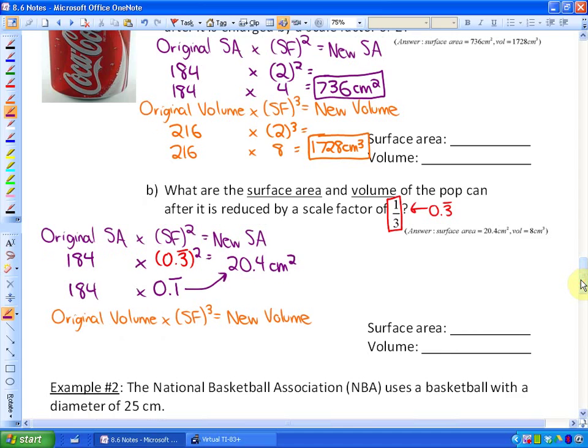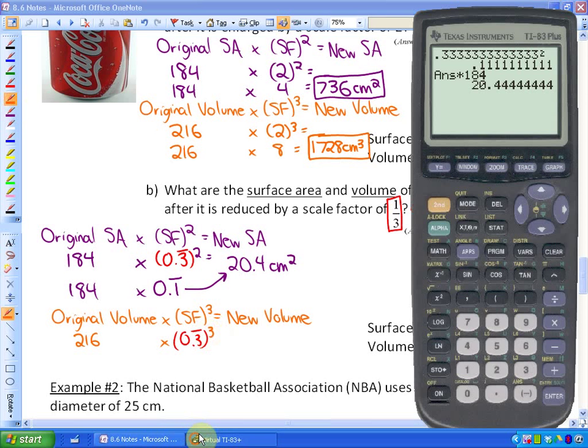And finally for this particular question, what is the volume of the pop can after it's reduced by that scale factor? Well, it would be the original volume, which is 216, times the scale factor, 0.3, which maybe I will put in red here, 0.3 continued cubed. So if I do 0.3333333333333 cubed, I get roughly 0.0307.